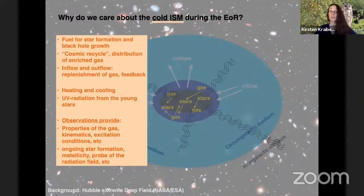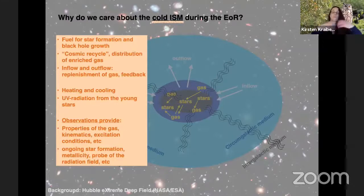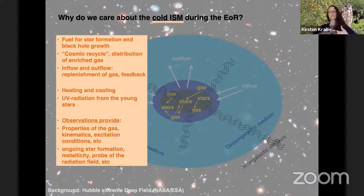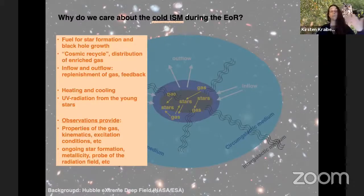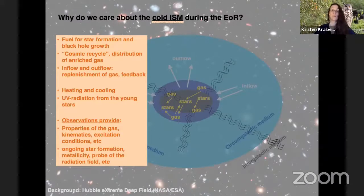So why do we care about the cold interstellar medium? Well, this is the fuel for the star formation. It's also the fuel for the growth of supermassive black holes. The interstellar medium represents basically the recycled dump of galaxies. Stars form, they die, they return their matter, new stars have formed, etc. This is also how the gas that's been enriched with increasing metallicity gets not just redistributed within the galaxies, but also gets removed out of the galaxies. The ISM is also a really good probe for what are the heating processes and the cooling processes. For example, we can use this to get an estimate of what is the UV radiation that is coming from the young stars. And for the epoch of reionization, this is really important because we want to understand how does the UV escape.